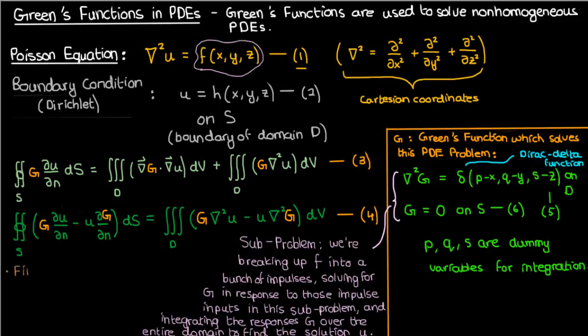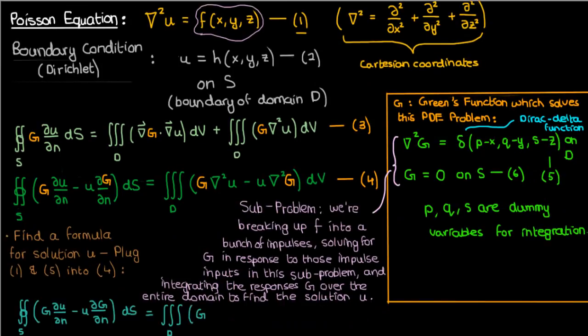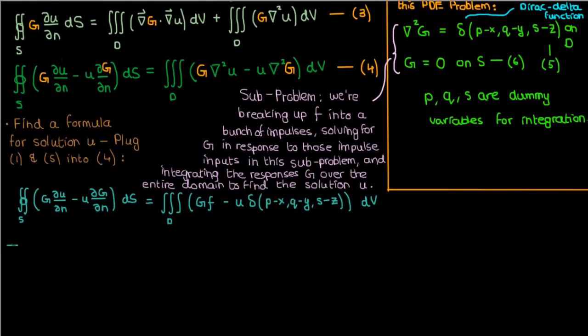Anyway, now that I've set things up, I'm going to find a formula for the solution u to the Poisson PDE given in equations 1 and 2. I'll start by plugging in equations 1 and 5 into Green's second identity in equation 4. The Laplacian of u is f from equation 1, while the Laplacian of capital G is the delta function from equation 5. What we're going to do now is break up the integral on the right-hand side.